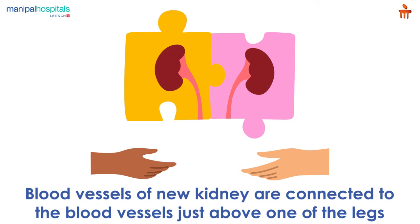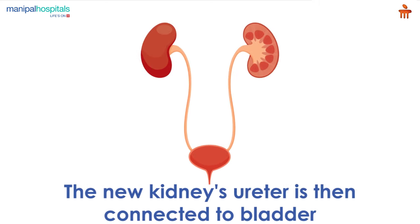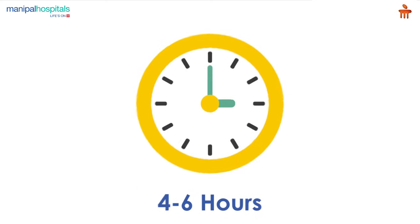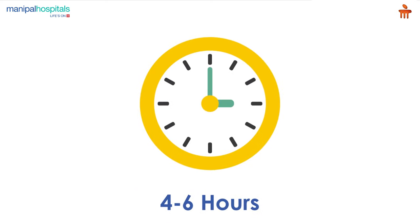The blood vessels of the new kidney are attached to the blood vessels in the lower part of your abdomen, just above one of your legs. The new kidney's ureter — the tube that links the kidney to the bladder — is then connected to your bladder.